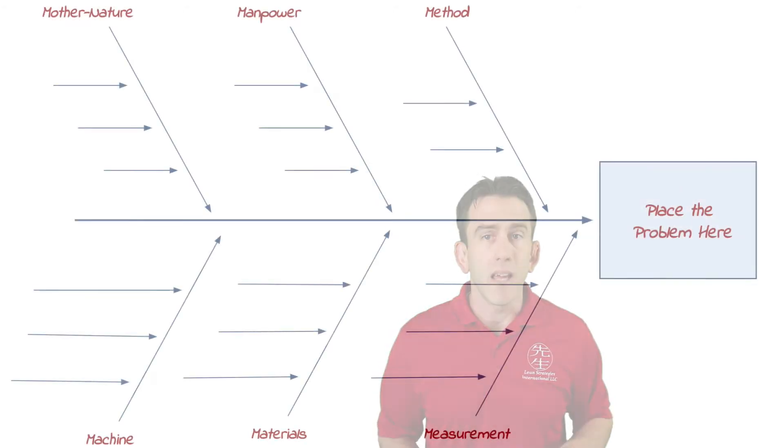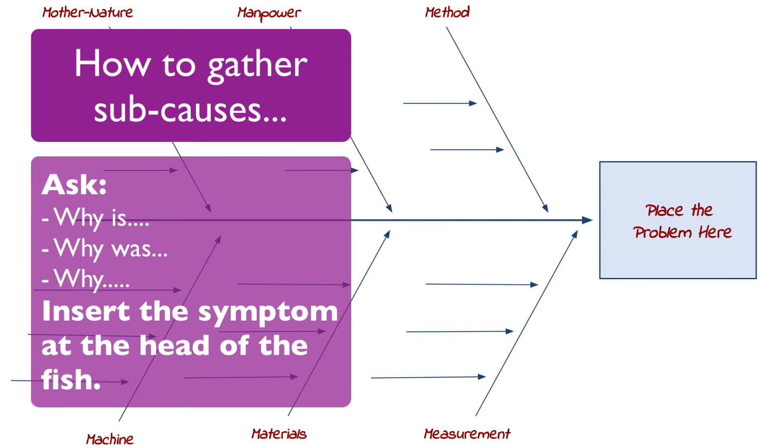A simple way to gather sub-causes is to ask why and insert the symptom at the head of the fish. Remember, a sub-cause should not be a solution. But if one comes up, put it in your parking lot. Be sure that you dig deep and do not stop at supposed solutions.